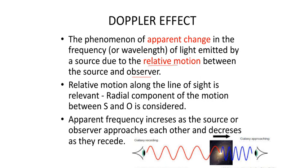The definition here: the phenomenon of apparent change in the frequency or in the wavelength of light emitted by a source due to the relative motion between the source and the observer. The two keywords are 'apparent change' and 'relative motion.' It is not a must that Doppler effect should happen when both the source and observer are moving.